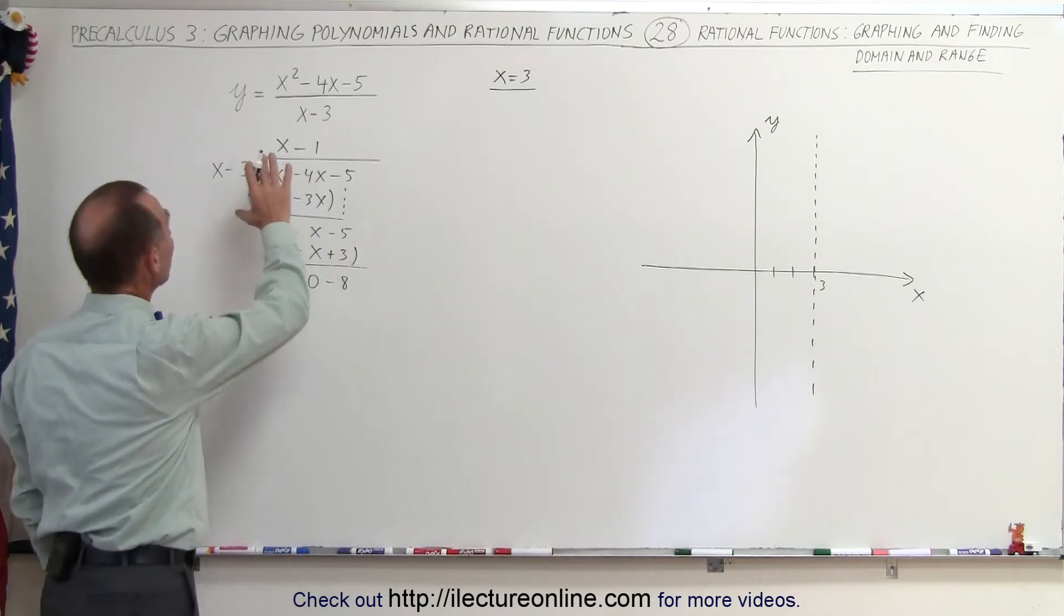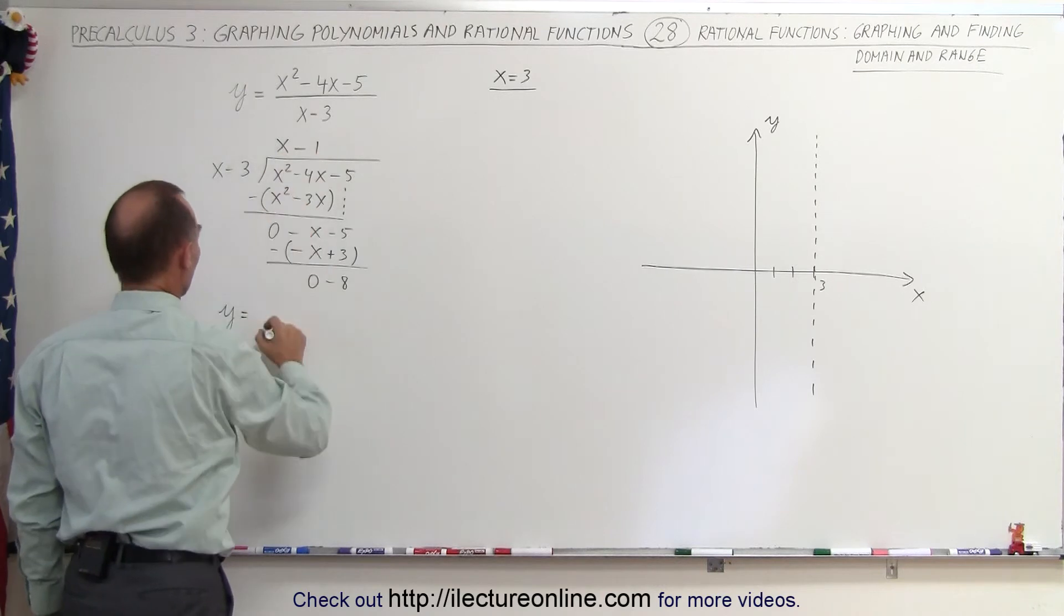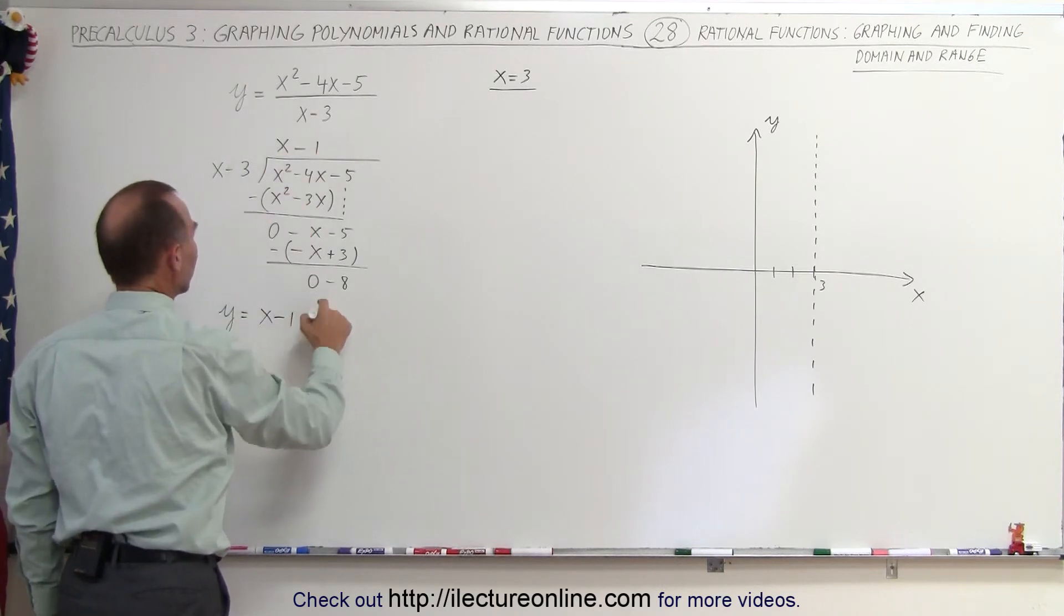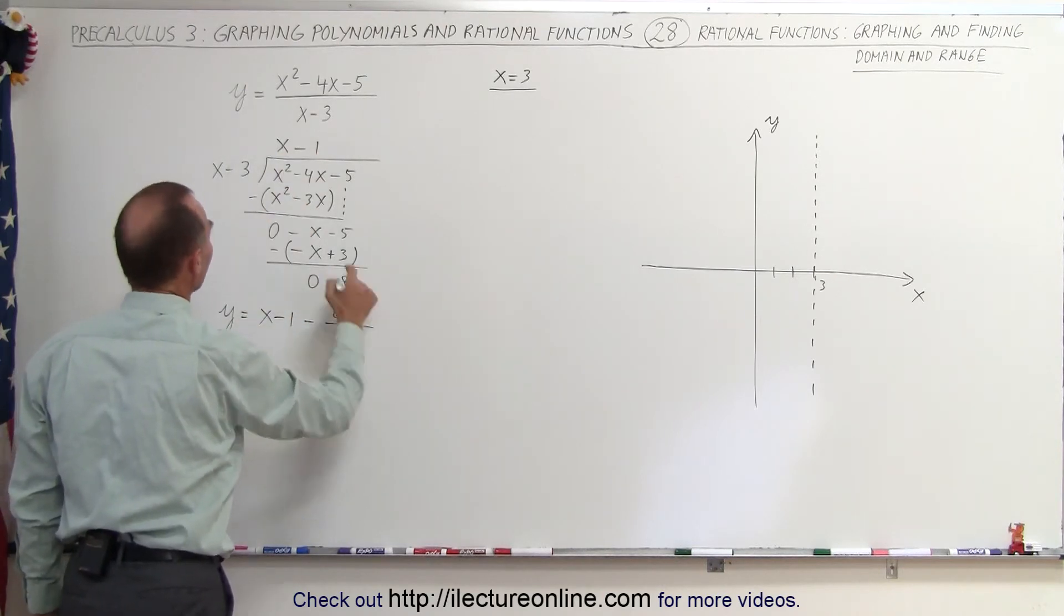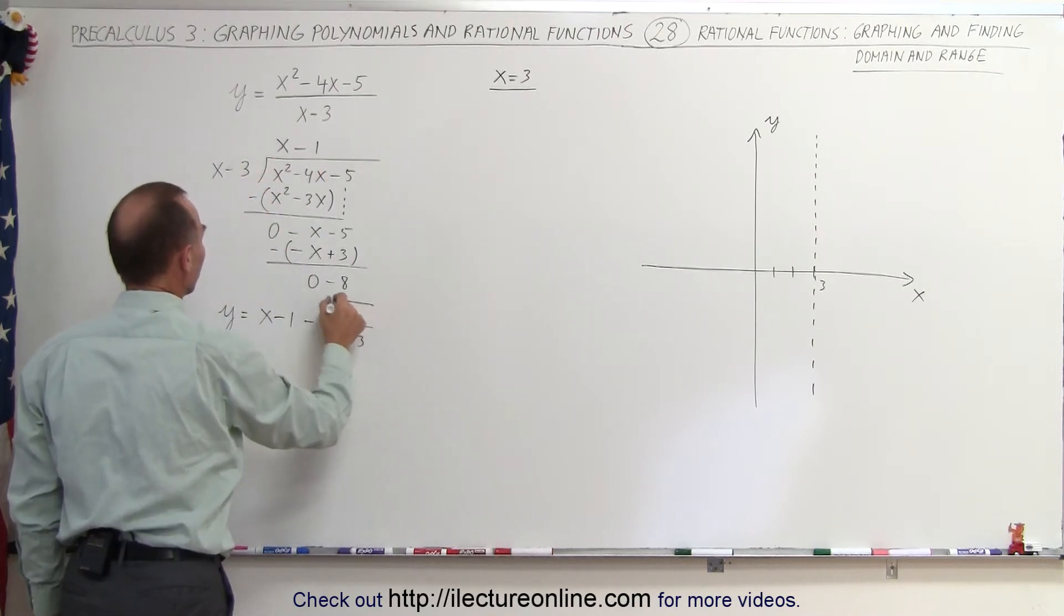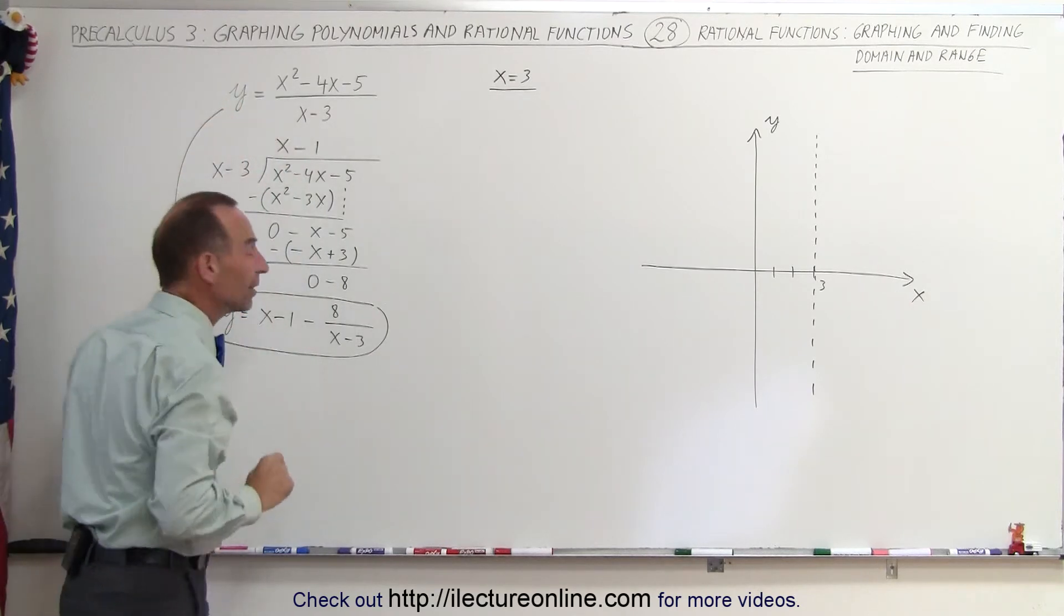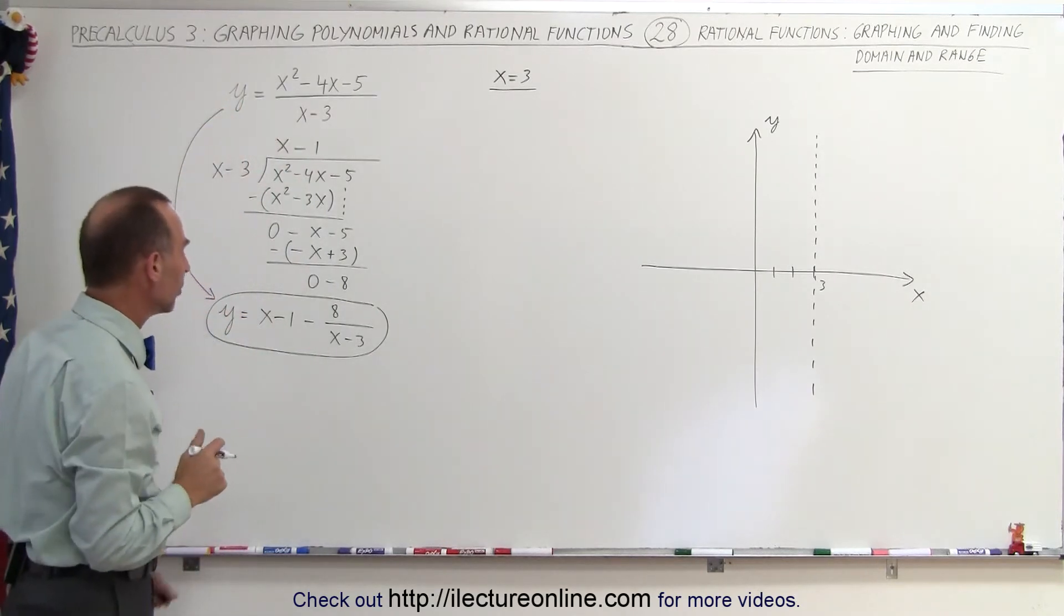What that means is I can rewrite my function as follows: y equals x minus 1, with a remainder of minus 8 divided by the divisor x minus 3. So this is the new format of the function. It's exactly the same as that function right there, but now with this, we can actually find our second asymptote.